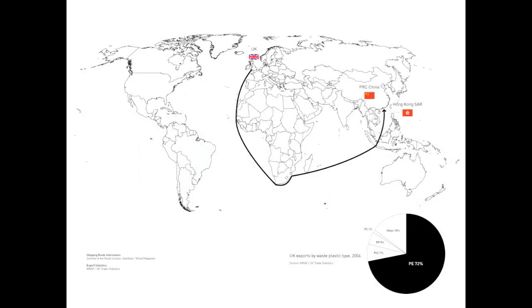Currently, the vast majority of plastics are shipped to Hong Kong, before being forwarded onto mainland China for reprocessing.